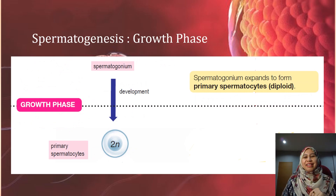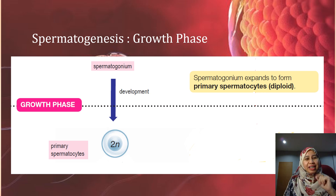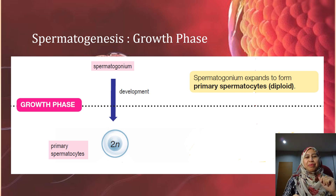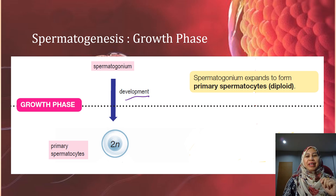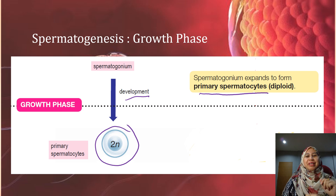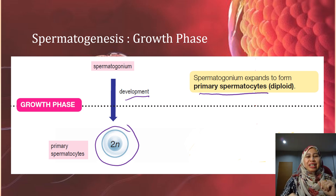Next is the growth phase. In the growth phase, each spermatogonium will develop and grow into a primary spermatocyte. This primary spermatocyte is also diploid — still diploid, that is 2N.